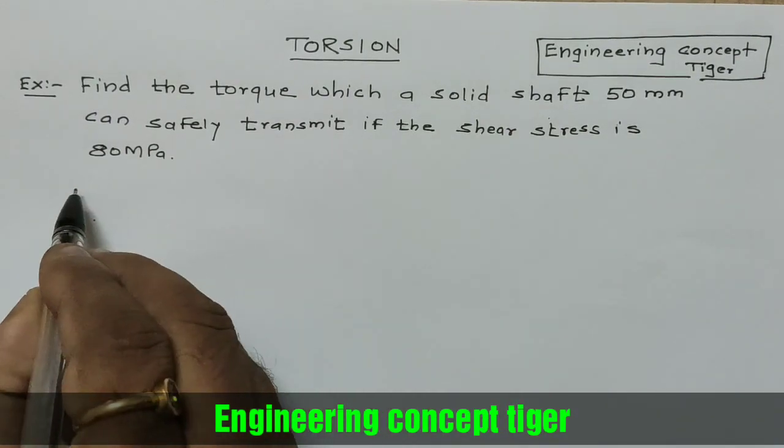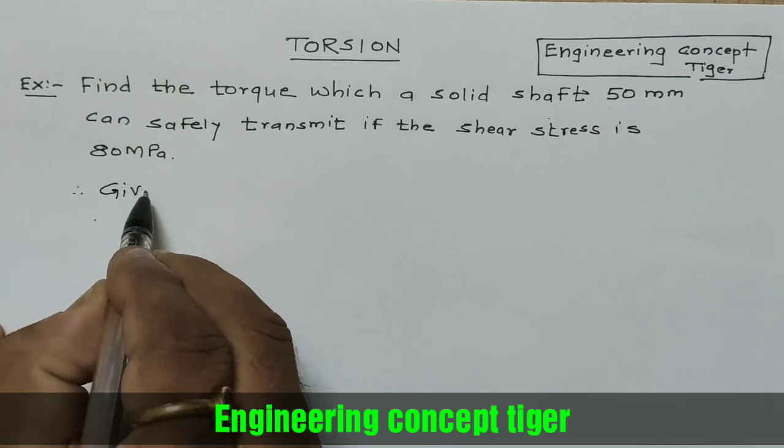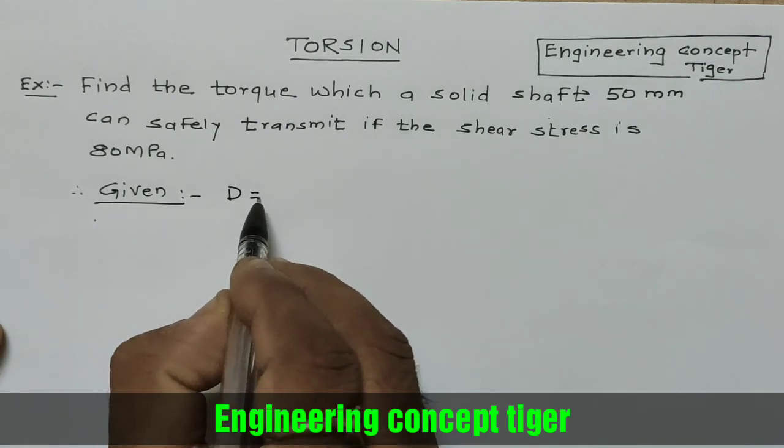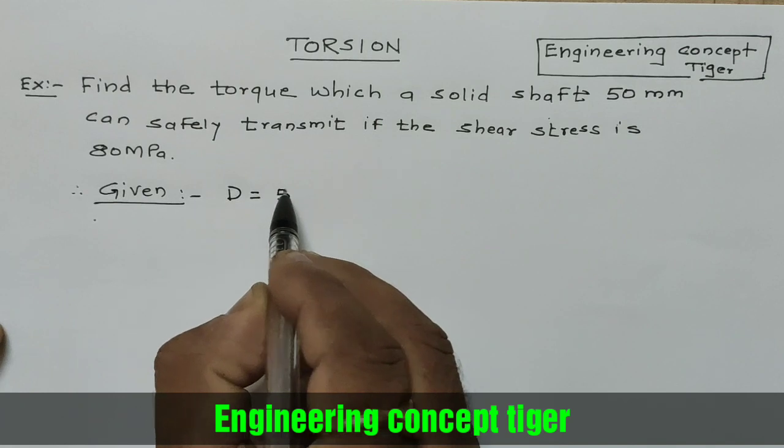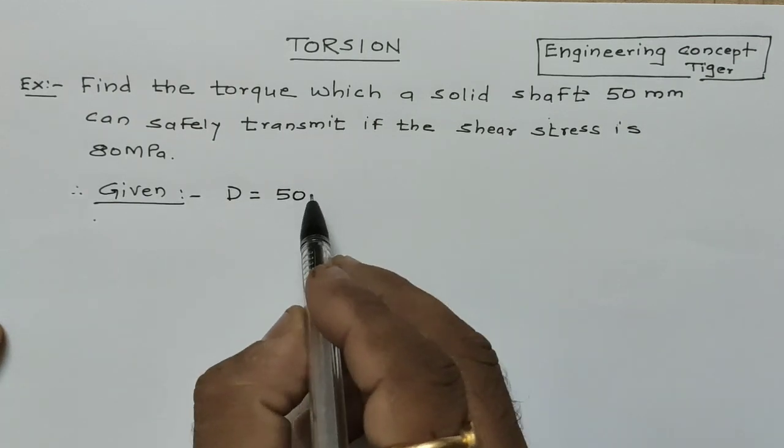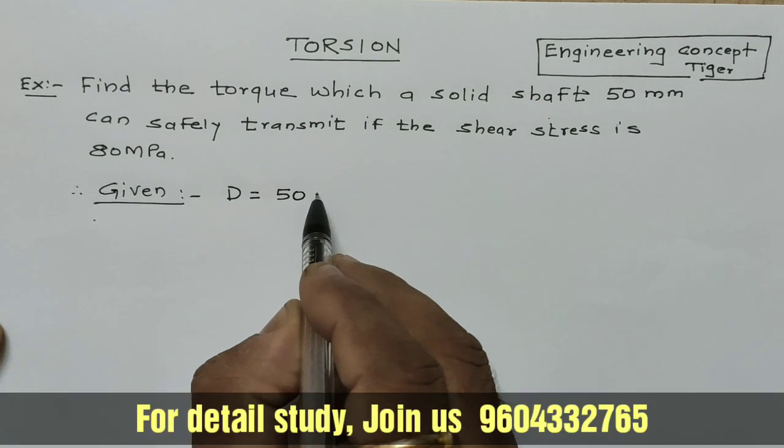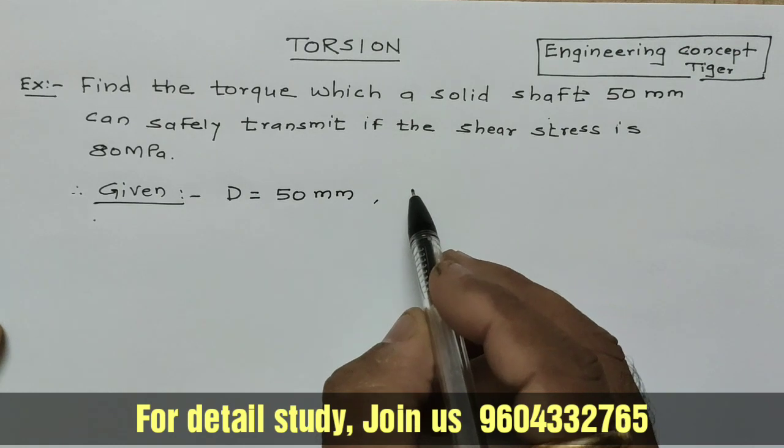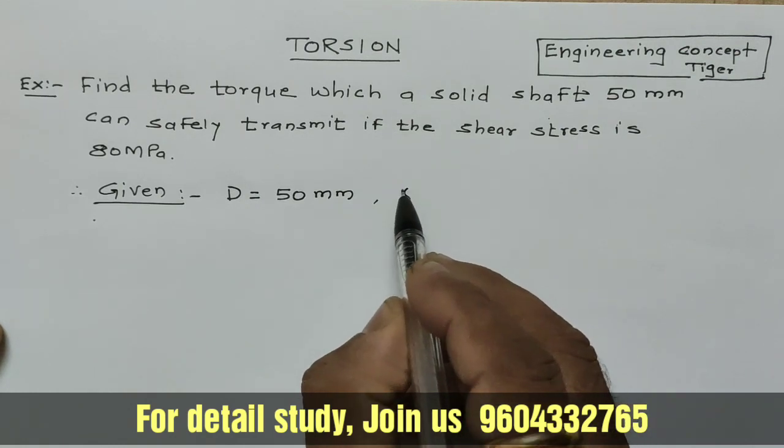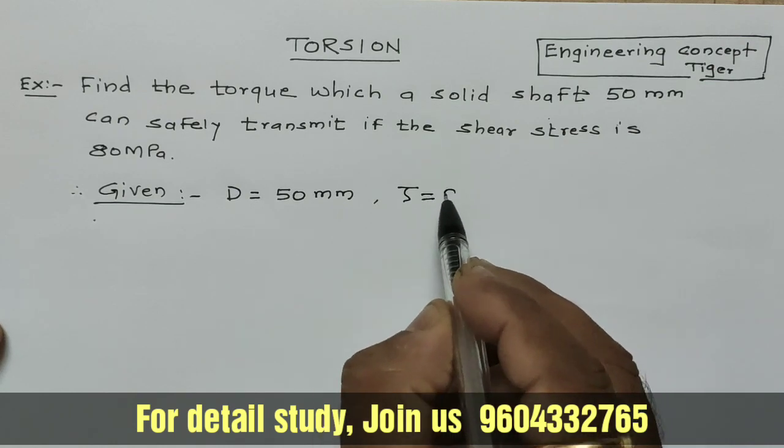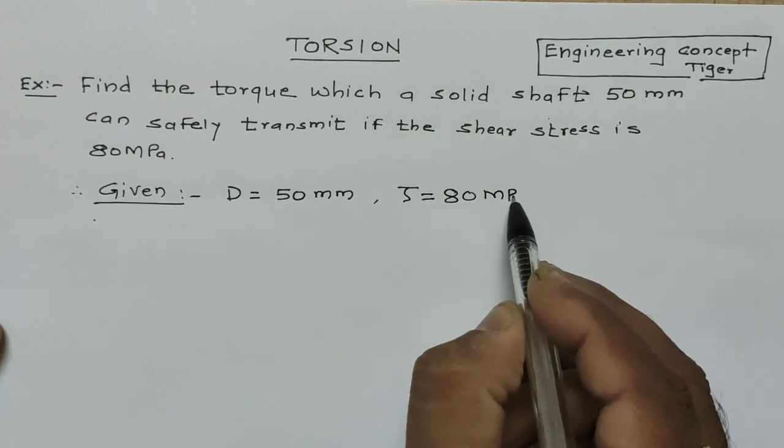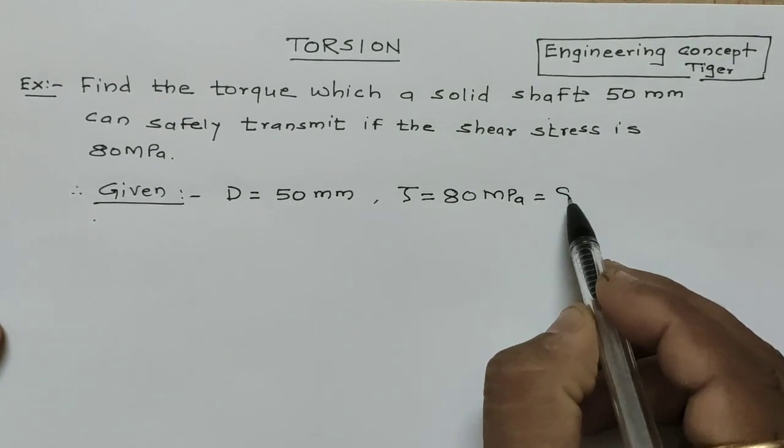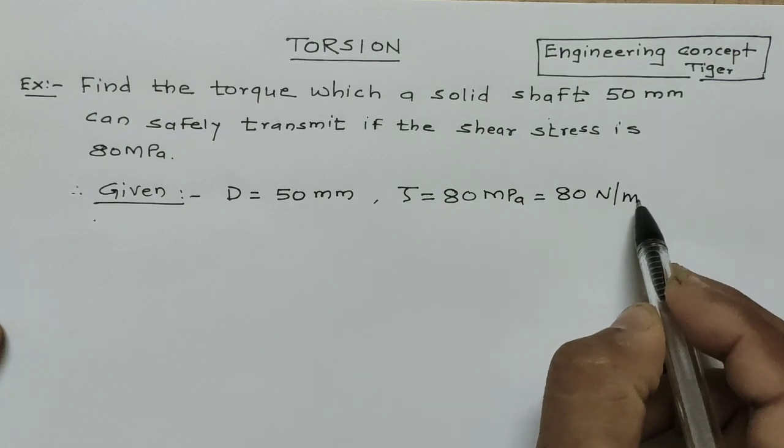Now here we have shaft diameter D equal to 50 mm. It is a solid shaft, therefore only one diameter, the outside diameter D equal to 50 mm. Shear stress is given: maximum permissible shear stress τ equal to 80 MPa. We convert this into Newton per mm², then it becomes 80 N/mm².